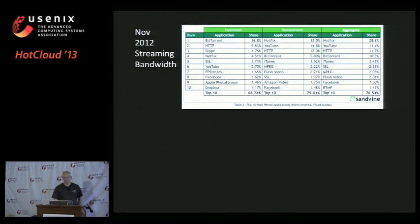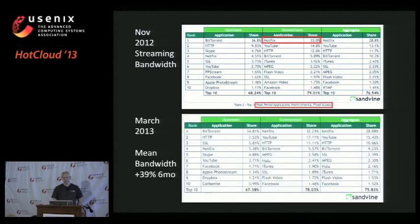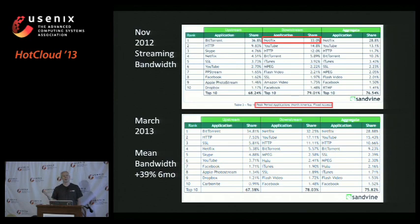Last November, looking at streaming bandwidth numbers: at peak period in North America for fixed access — DSL, cable, not mobile — Netflix had a third of all traffic delivered to customers' homes. We've had to build our own CDN because all the other CDNs can't support this much traffic anymore. Six months later, total mean bandwidth was up 39 percent — more people getting broadband, more people using it, getting higher bandwidth streams. We're still about a third of it, and some competitors dropped off the list.